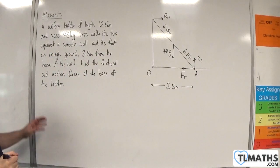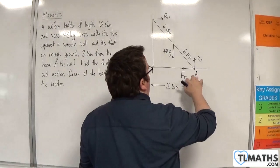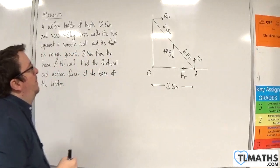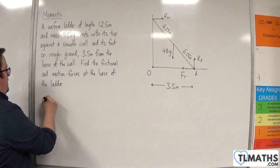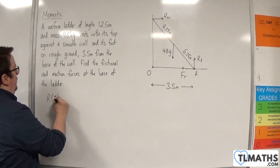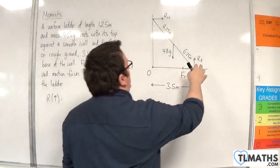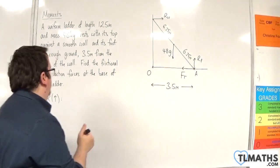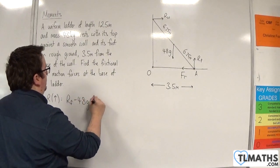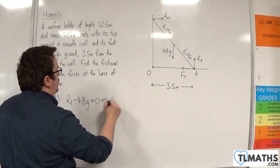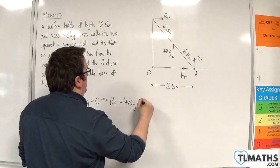Okay, find the frictional and reaction forces at the base of the ladder. So I want to find Fr and Rf. Right, so let's start by resolving vertically. I'm going to take upwards as positive. Now we have two forces acting vertically. We've got the Rf and the 48g. So Rf take away 48g must be 0, so the reaction on the floor is 48g newtons.